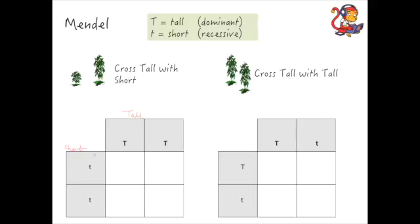So when he crossed these together, he would have got capital T lowercase t for all of the scenarios. At higher level, you need to be thinking about calling these heterozygous because they've got one of each allele.